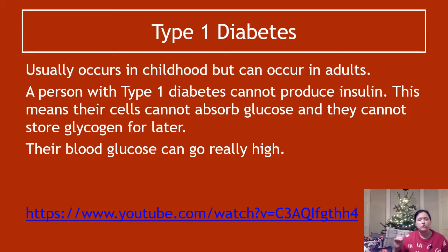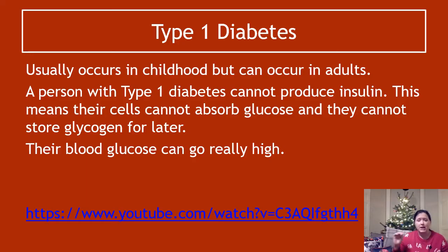What this means is your cells can't absorb glucose and you can't store glycogen for later. So blood glucose can go really, really high, but energy levels — even though you've got lots of glucose in your blood — actually really plummet due to the fact you can't access that glucose inside your cells.